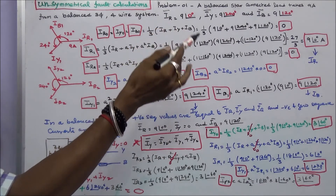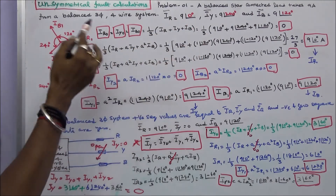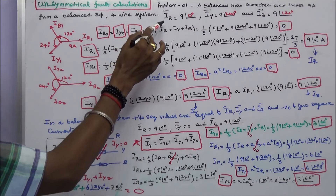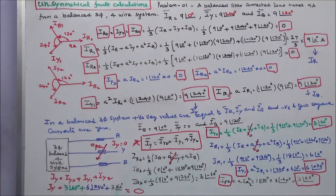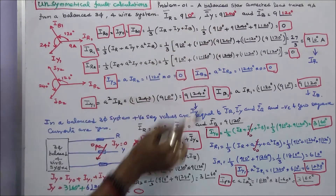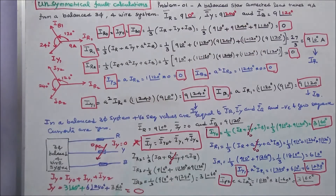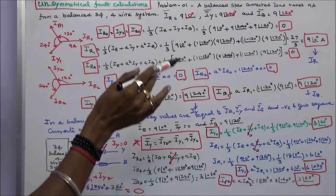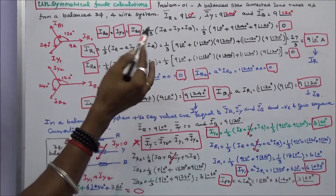A balanced star-connected load takes 9A from a balanced 3-phase 4-wire system. IR is equal to 9 angle 0 degrees, IY is equal to 9 angle 240 degrees, and IB is equal to 9 angle 120 degrees. The question is to calculate the zero sequence, positive sequence, and negative sequence currents.